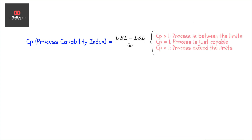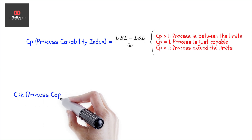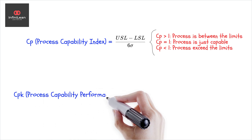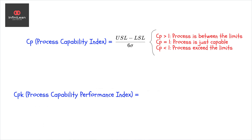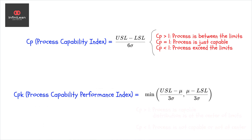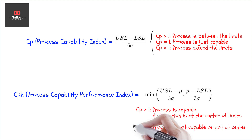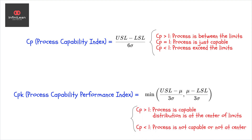CPK, on the other hand, is the Process Capability Performance Index. It considers the spread and the process mean's position relative to the specification limits, giving a more realistic picture of process capability.